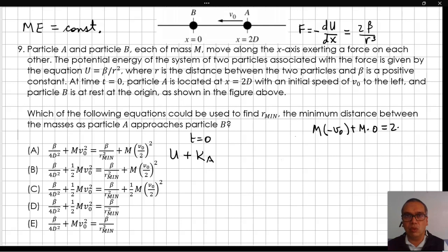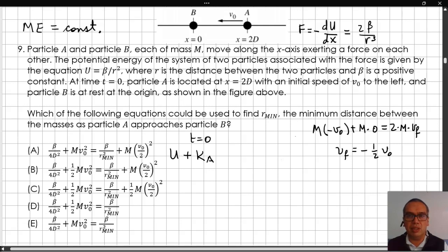Therefore, we can use conservation of momentum to determine that the final velocity of the two particles is one half of the initial velocity for particle A.